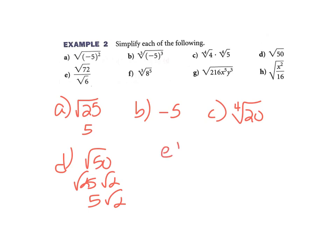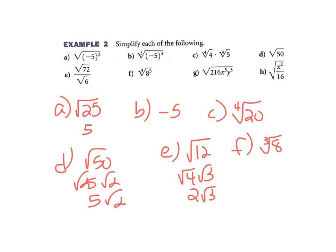Part E: you're allowed, if you have the square root of 72 over the square root of 6, to divide them. So I'll make it the square root of 12, because 72 divided by 6 is 12. I can break down 12 with a 4 and a 3. The square root of 4 is 2; I don't know the square root of 3, so it stays. Part F: the cube root of 8 to the 5th. I know the cube root of 8 — that's why I'm choosing this order — the cube root of 8 is 2, which still has a 5th power, and 2 to the 5th power is 32.